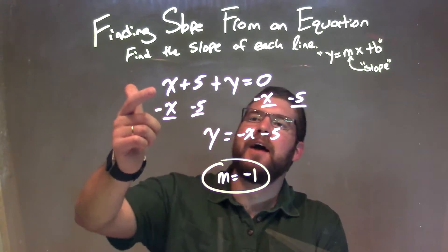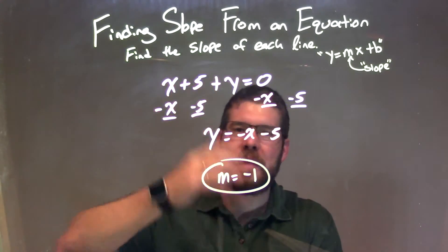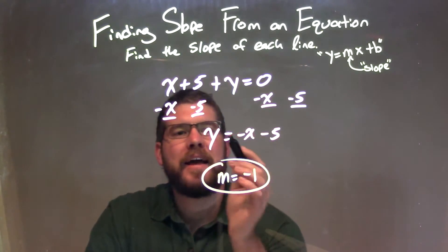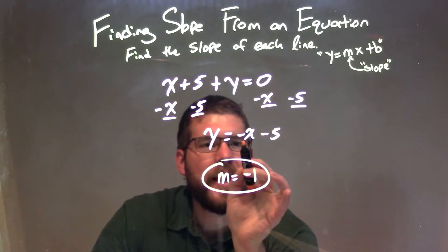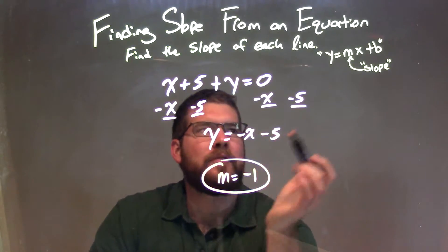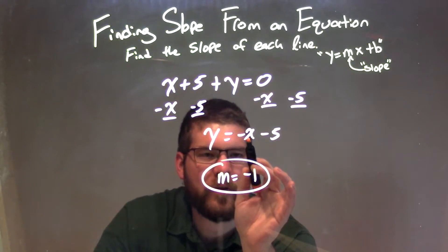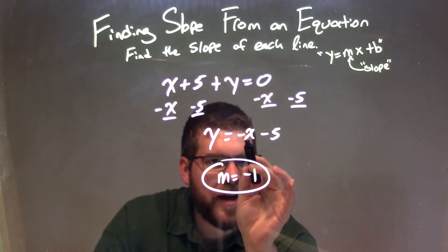So let's recap. We're given x plus 5 plus y equals 0. I need to isolate y, so subtracting x to both sides and subtracting 5 to both sides. That gave me y by itself here is equal to negative x minus 5. That's our slope intercept form. Our slope is the value of the coefficient in front of x. There's like an imaginary negative 1 there.